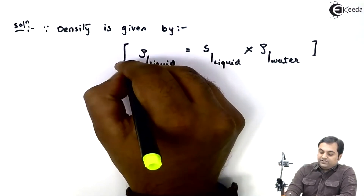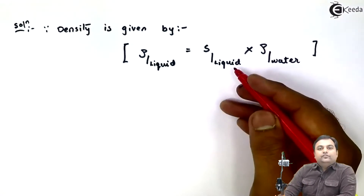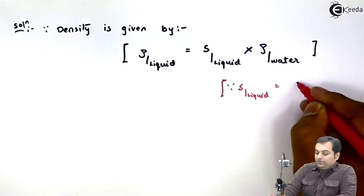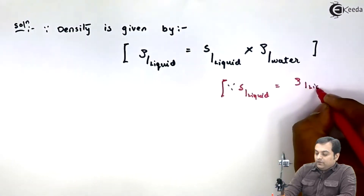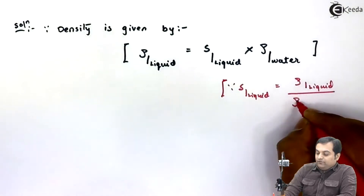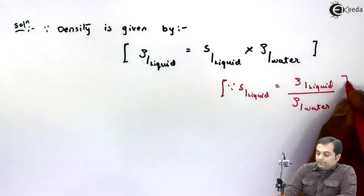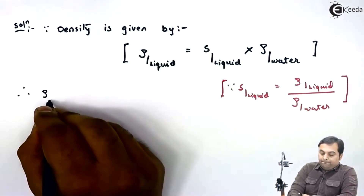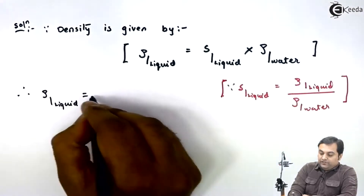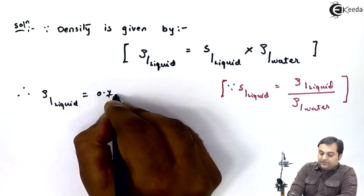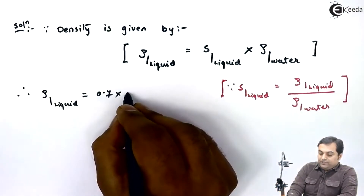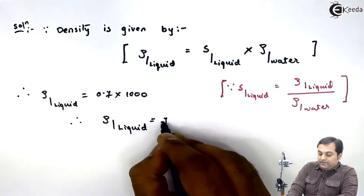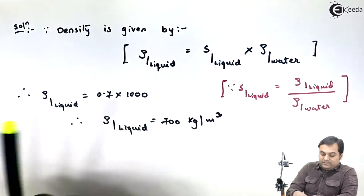This relation comes from the formula of specific gravity: specific gravity of any liquid equals the density of that liquid divided by the density of water. So density of liquid equals specific gravity of liquid — which is 0.7 — into the mass density of water, which is 1000 kg per meter cube. Therefore, the density of liquid comes out to be 700 kg per meter cube. This is my first answer.